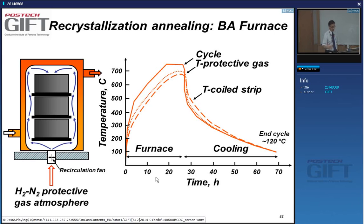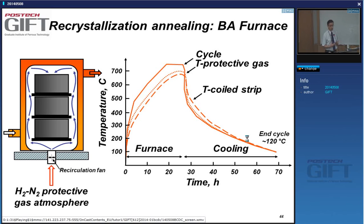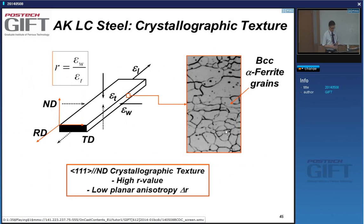In the case of batch annealing, you have a very slow process. To anneal coils stacked in the batch annealing furnace, you need about 24 hours, and about the same amount of time for cooling. During this recrystallization annealing — there's no transformation going on — you basically recrystallize the material. You also develop texture in strip material, and this can be very beneficial. The texture obtained for cold-rolled, no-carbon steels is defined by the parameter R.